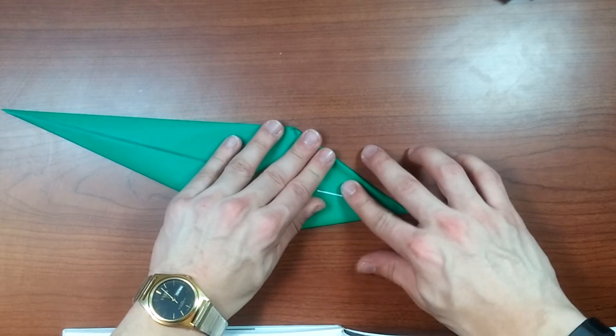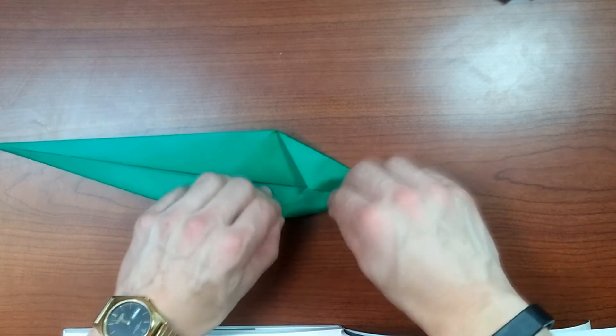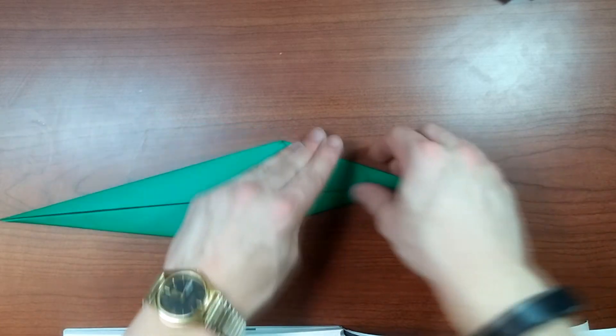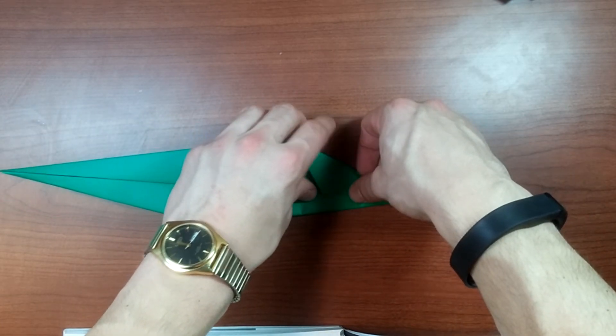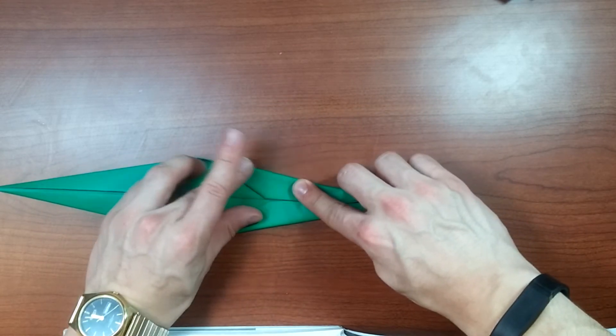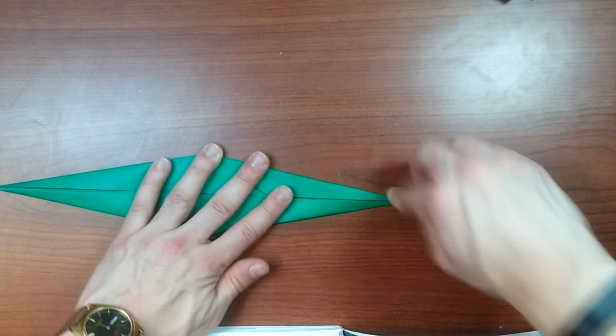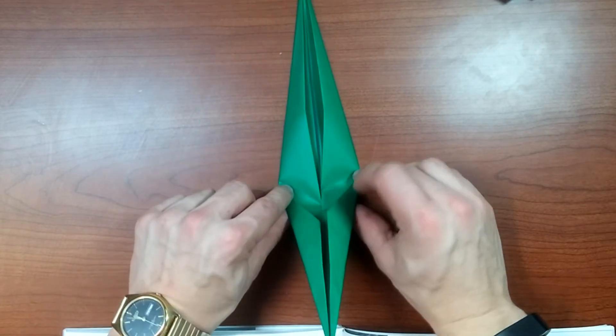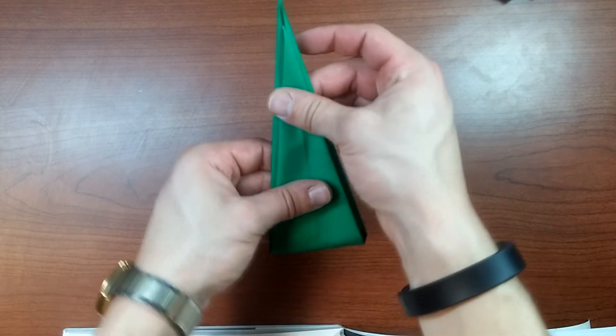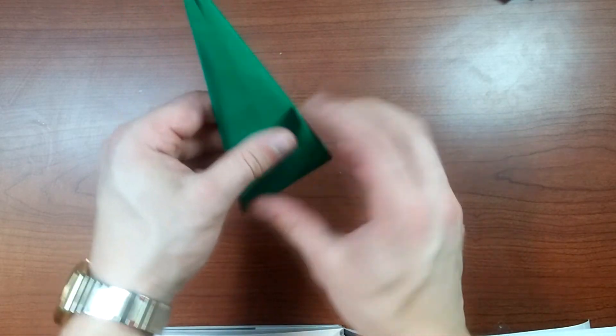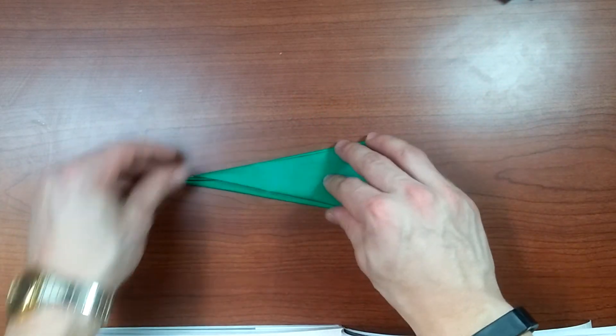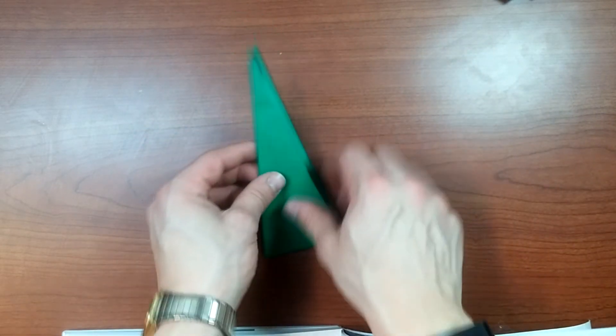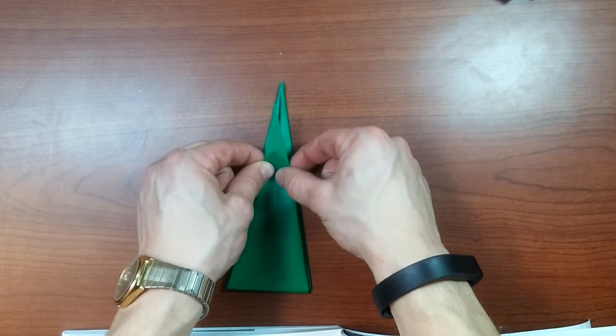It's going to get even worse. Do the same exact thing. These two edges into the center. All right. Now. Fold. Make a crease from this point to this point. Like this. There we go.